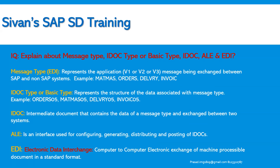Explain about message type, IDoc type or basic type, and EDI. Message type represents the application — like sales, shipping, billing, or shipment — message being exchanged between SAP and non-SAP systems. Standard message types include MATMAS, ORDERS, DELIVERY, and INVOICE. IDoc type or basic type plays a vital role and represents the structure of the data associated with a message type — for example, ORDERS05, MATMAS05, DELIVERY05, and INVOIC05. IDoc is an intermediate document containing data of a message type exchanged between two systems.